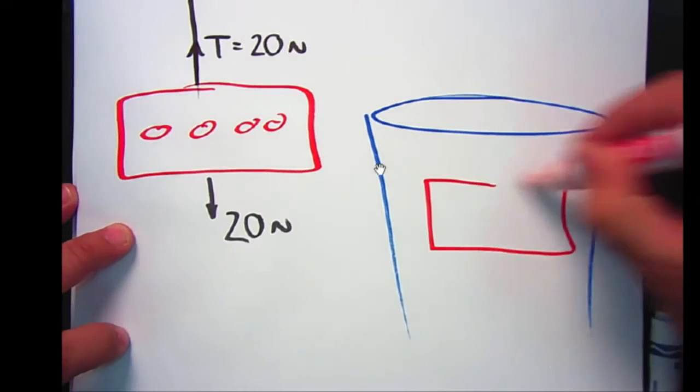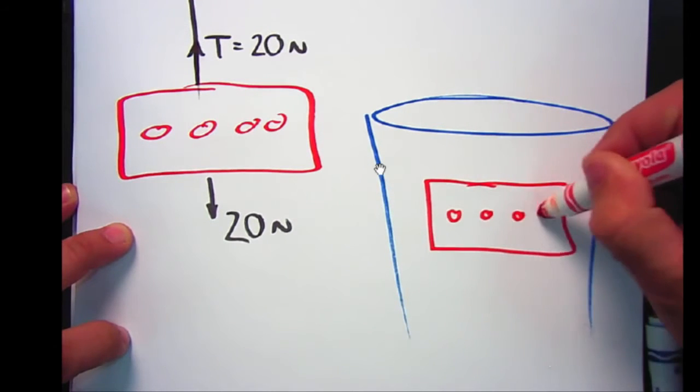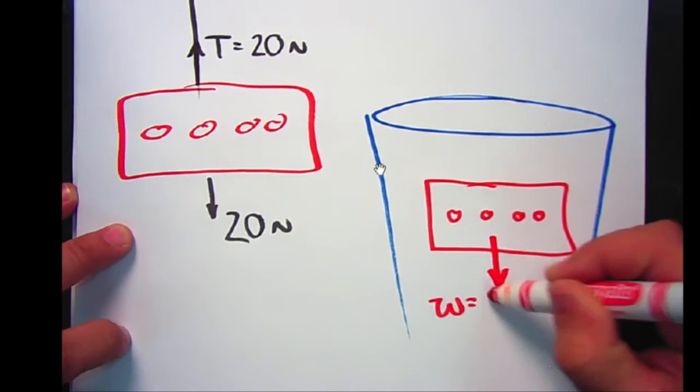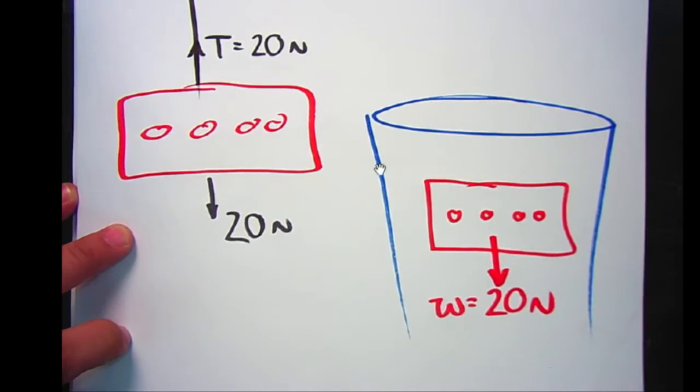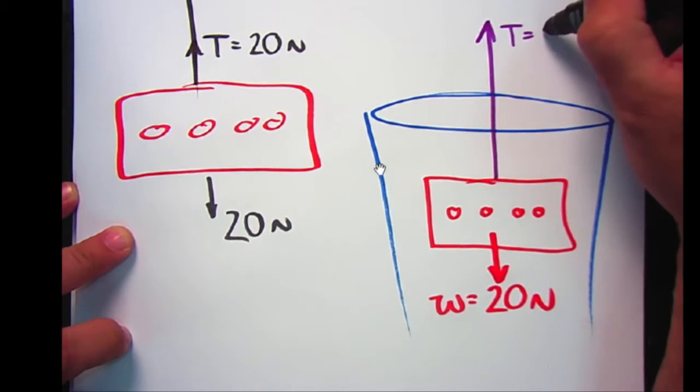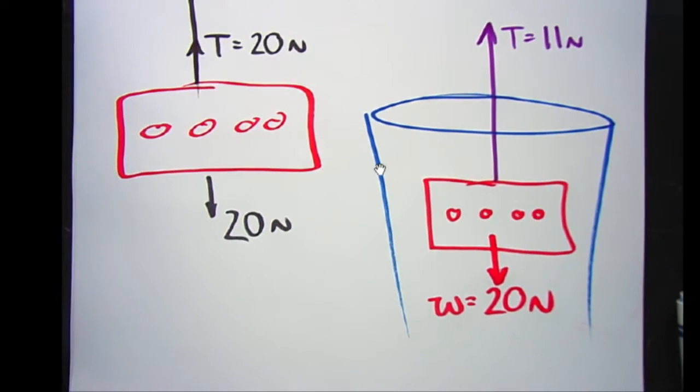We still had the same brick, it still had the same mass, and it still had the same acceleration due to gravity. Its weight is still 20 newtons, but the tension required to hold it up this time was only 11 newtons. It seemed like there was force missing.